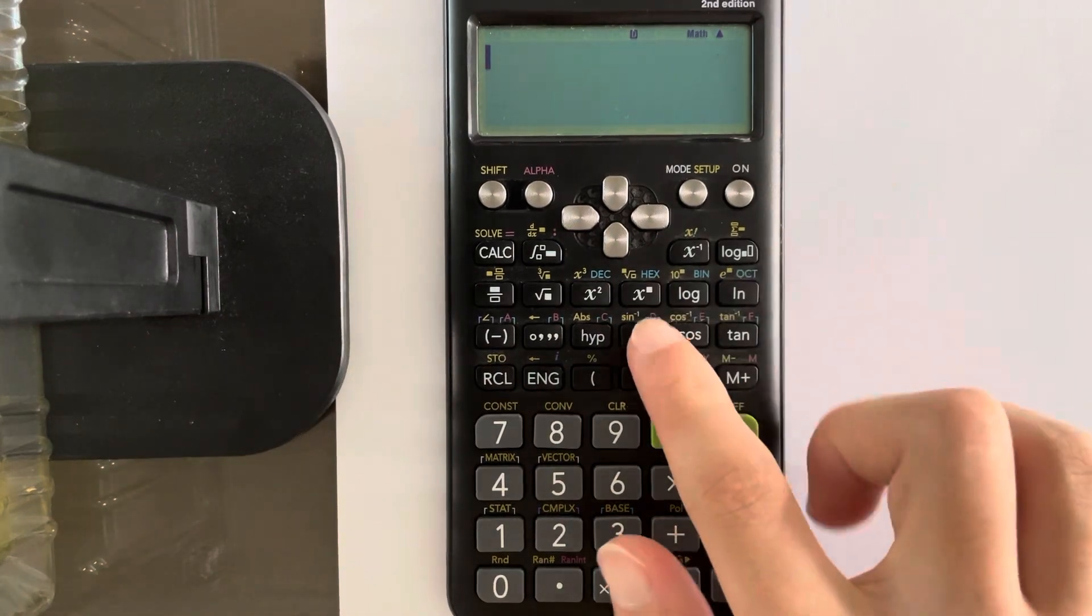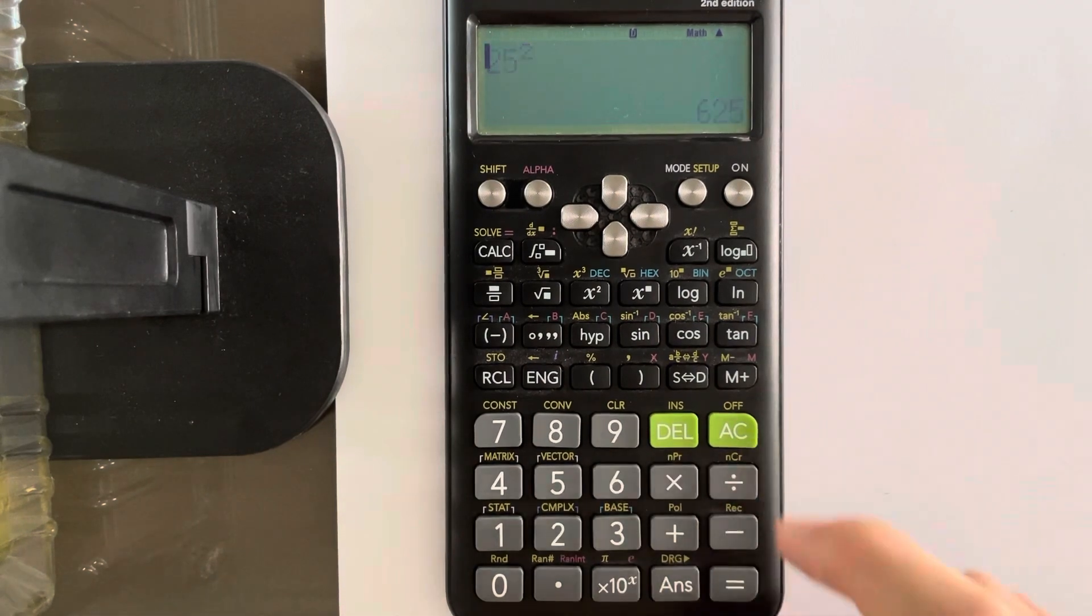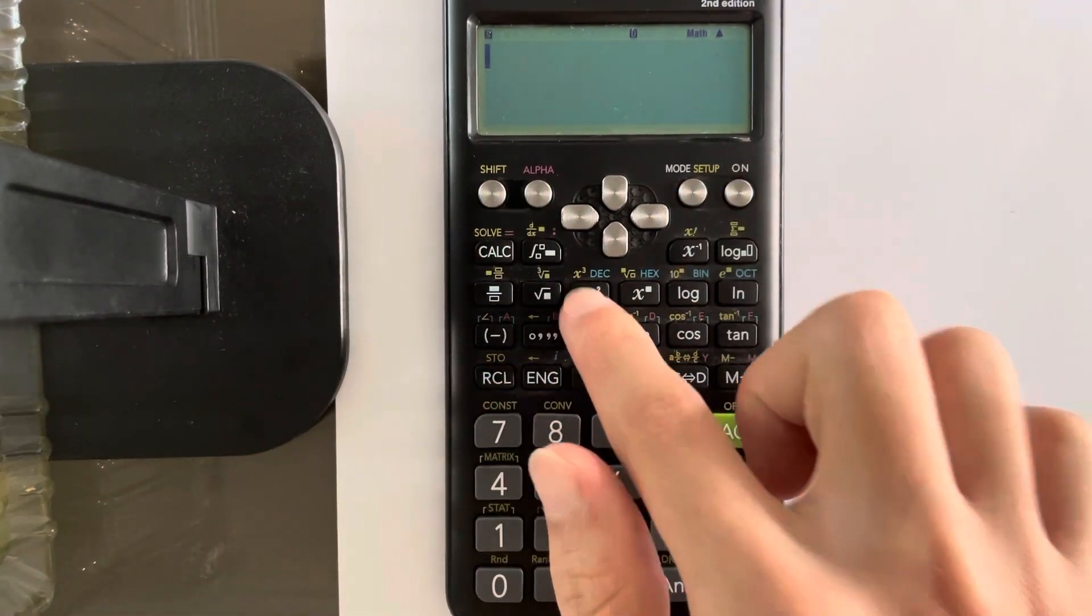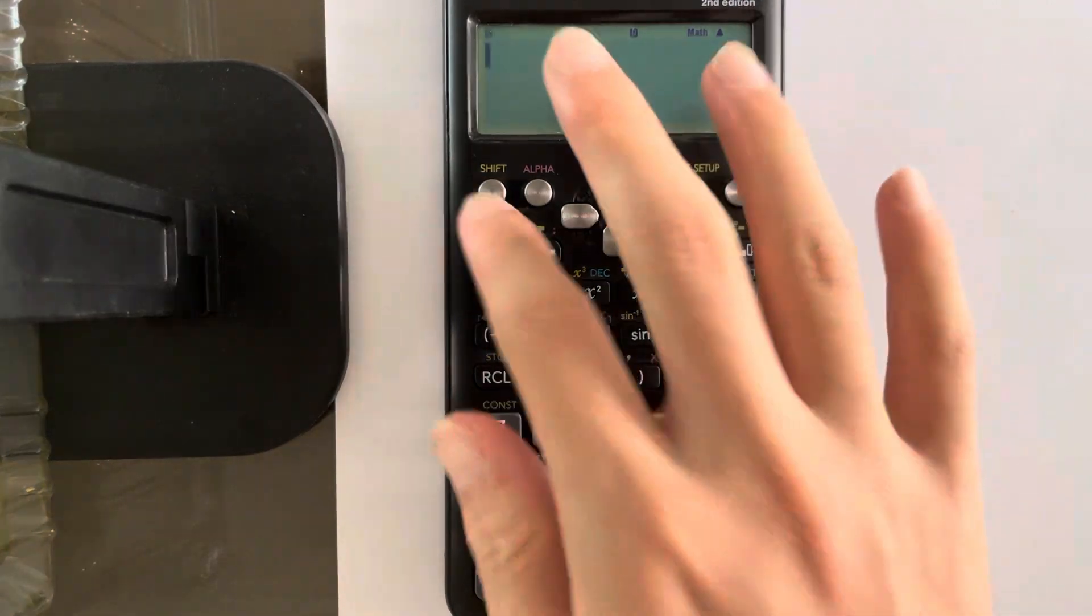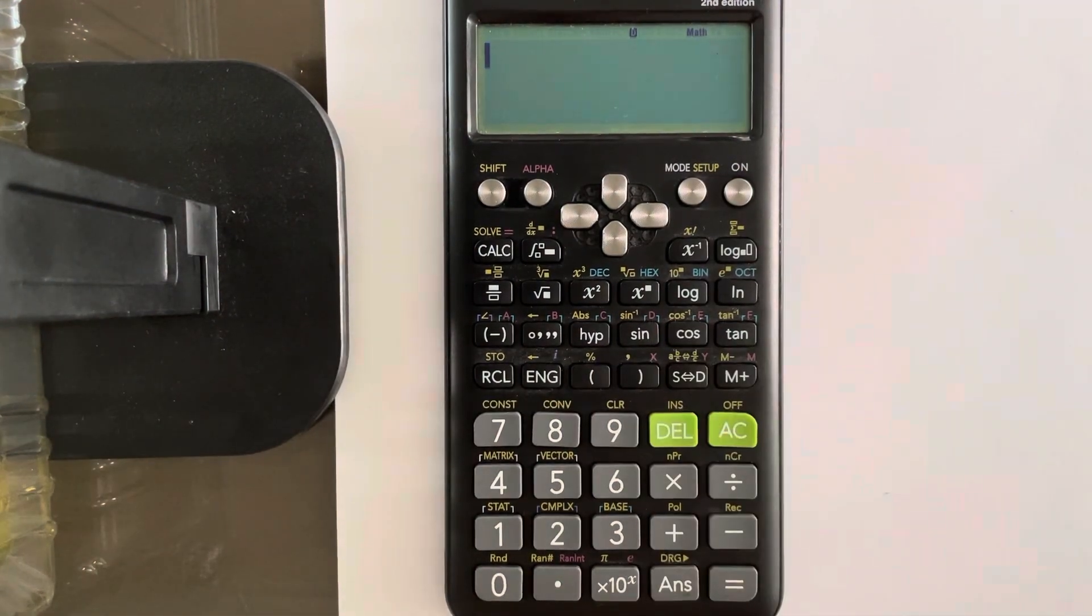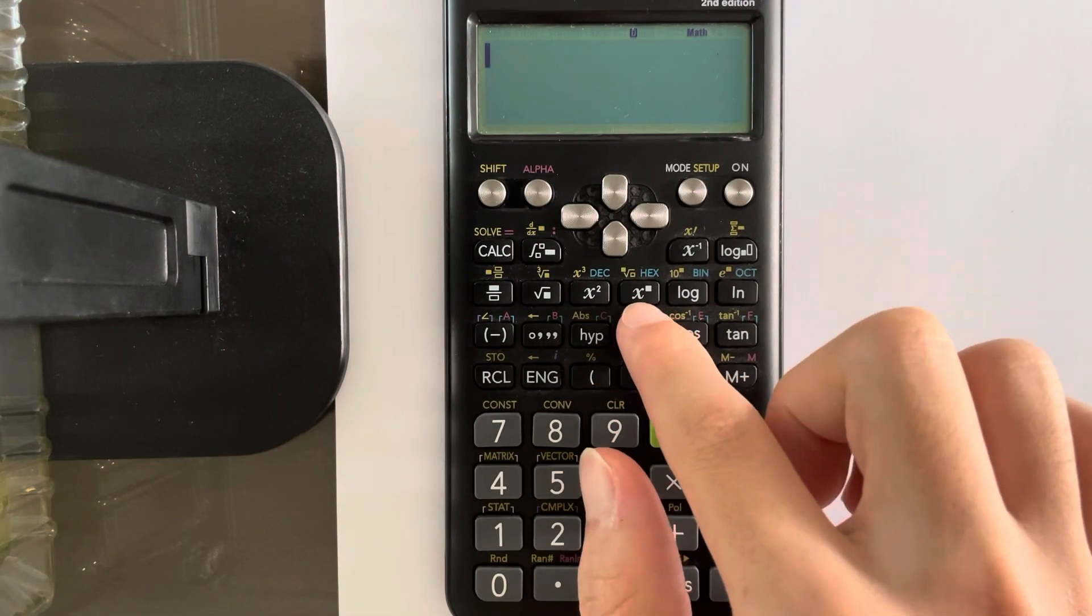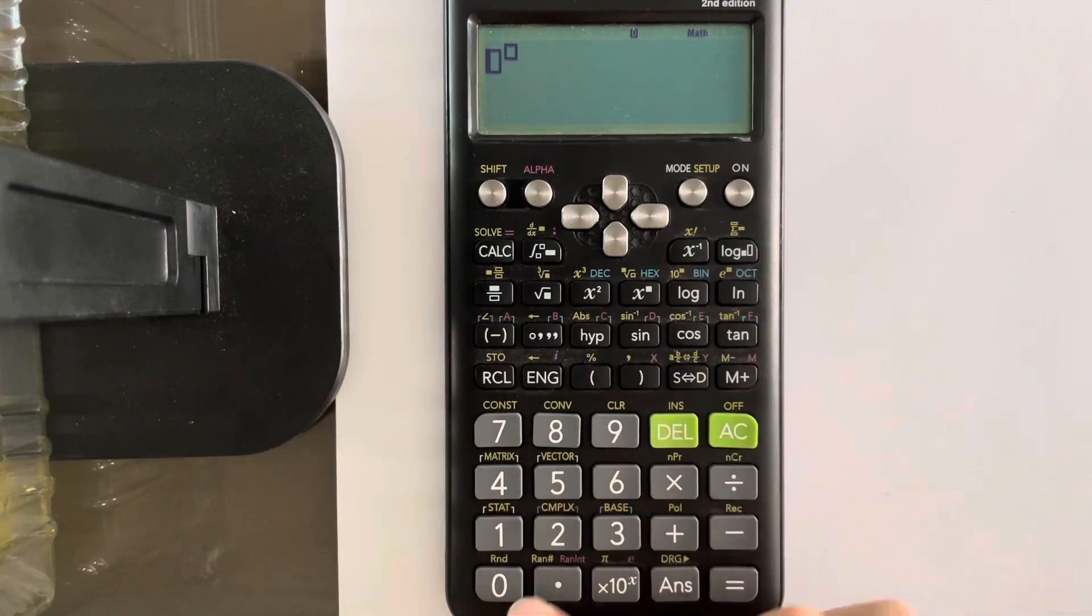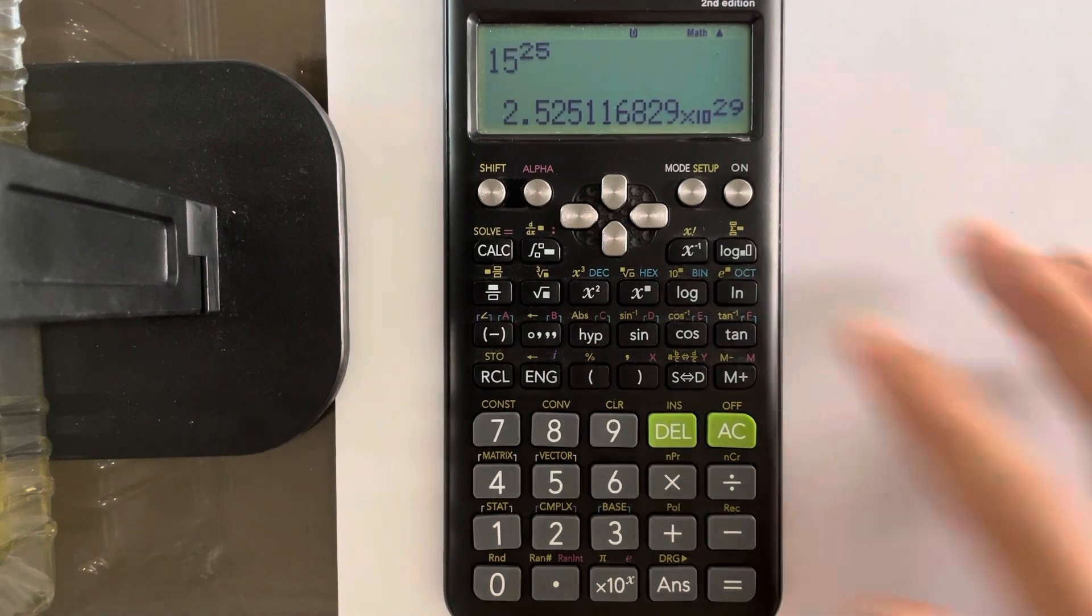And to square a number, just press this. So 25, 625. If you want to cube a number, shift and you see this sign here. 25 cubed. And if you want to do something higher than cubing, similar to the roots, it's for putting a number to the power of something. It's not actually a function. You just press it here. You don't even need to use shift. Here, x and you see the square, right? That means you can input whatever you want. 15 and then you go right and 25. 15 to the power of 25 is this.